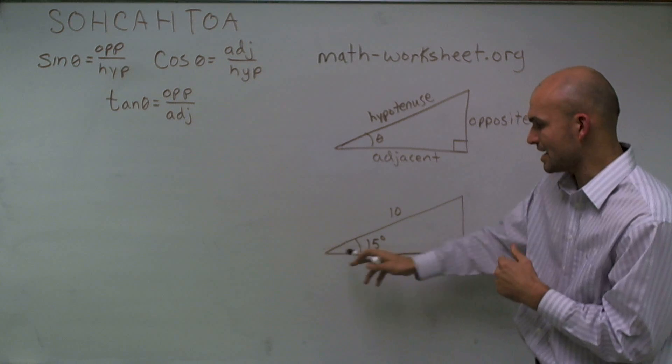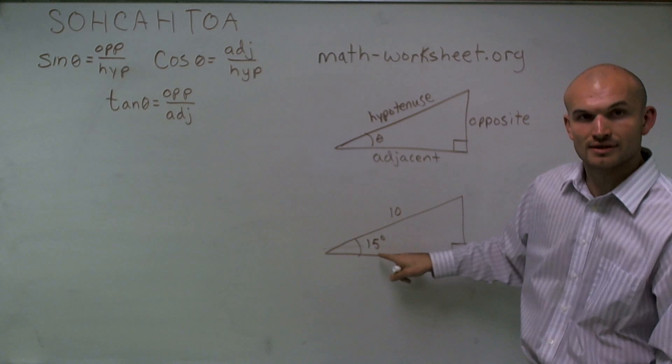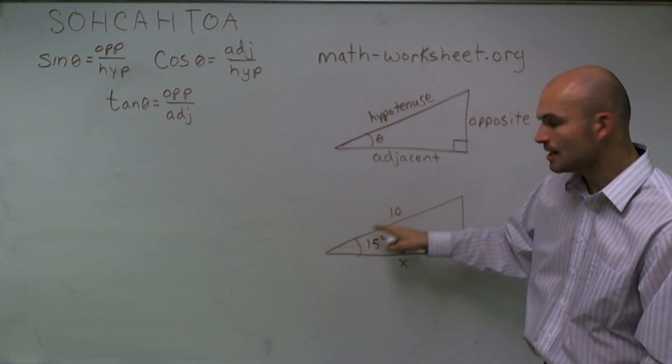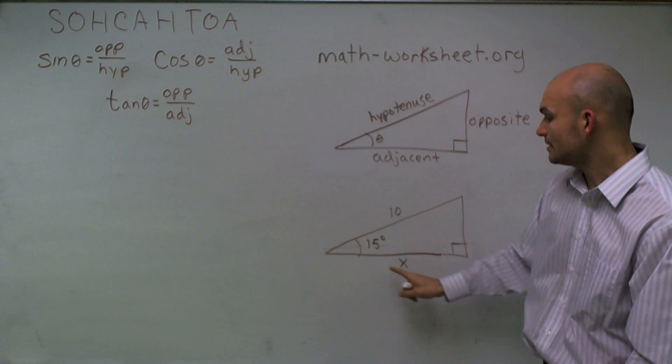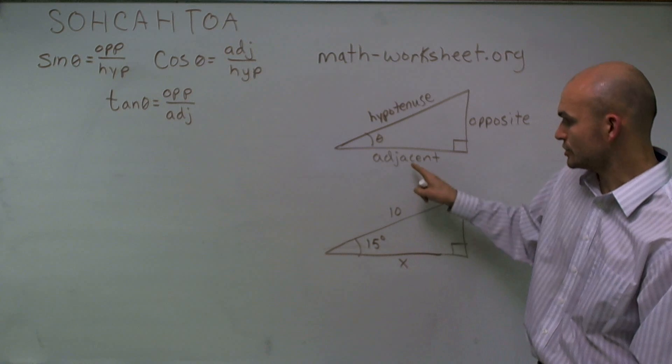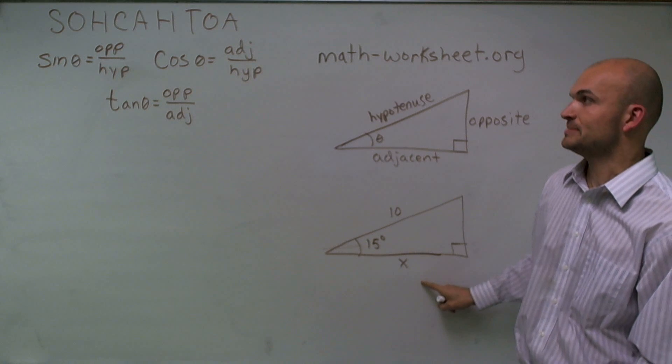So right here, we have a problem where I have a right triangle. My angle has been given, which is 15 degrees. My hypotenuse is 10. And my side length, which I know is going to be my adjacent side, is going to be x.